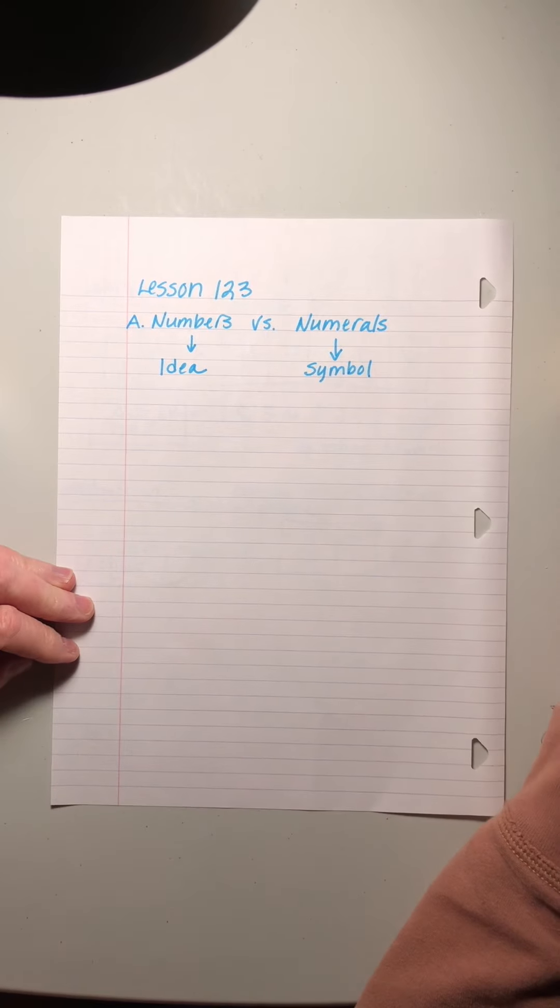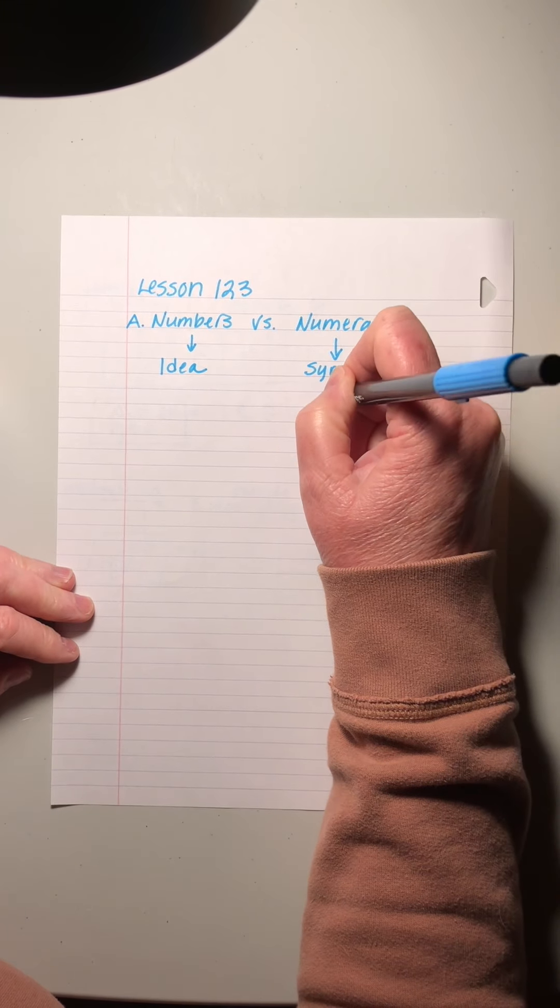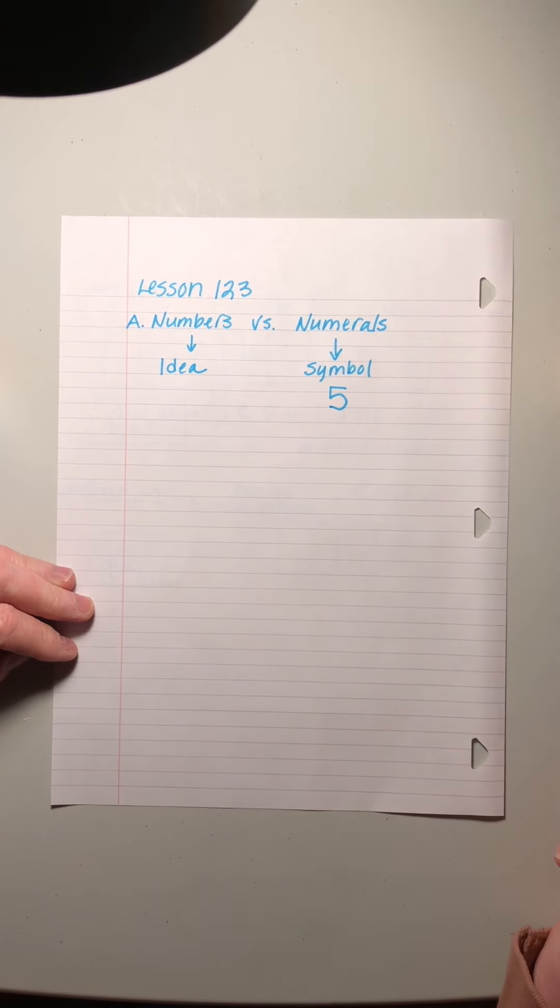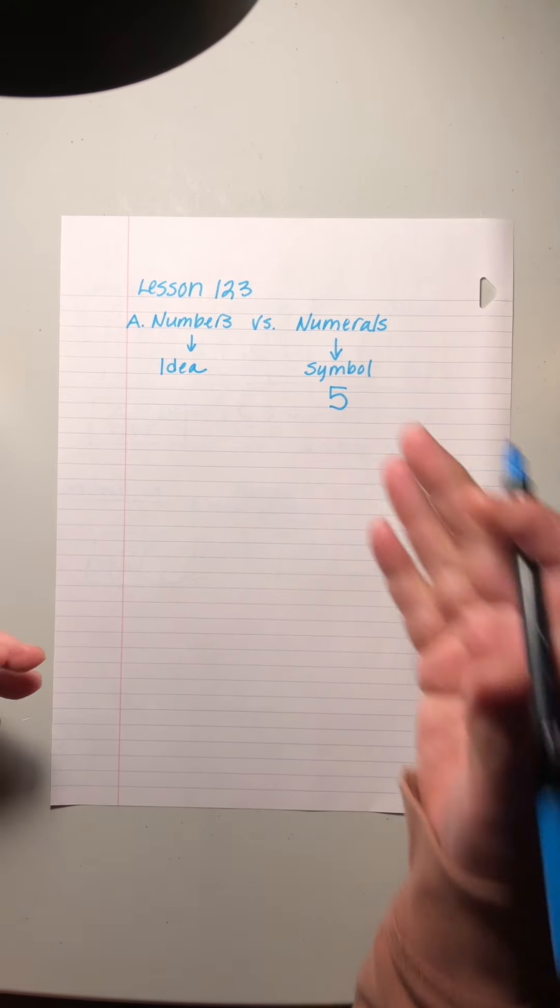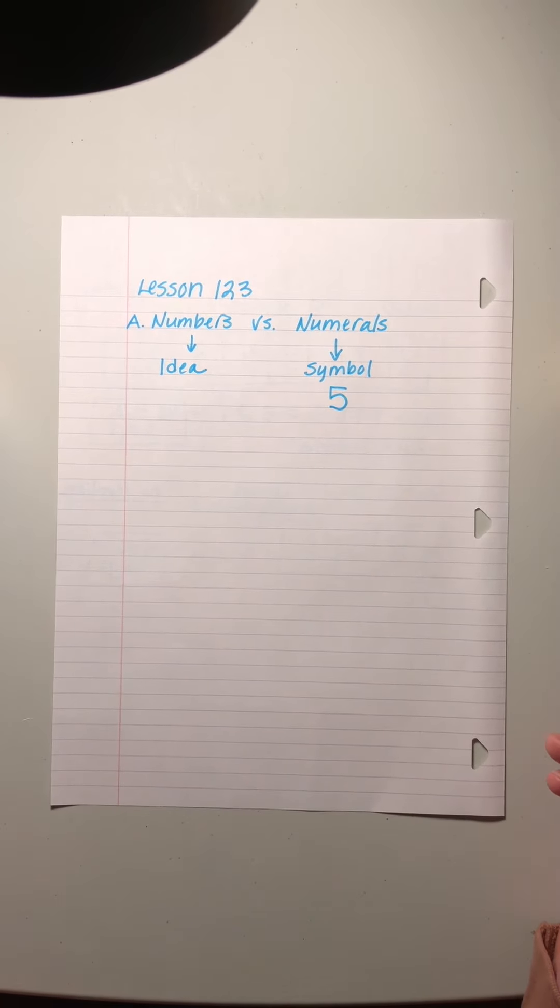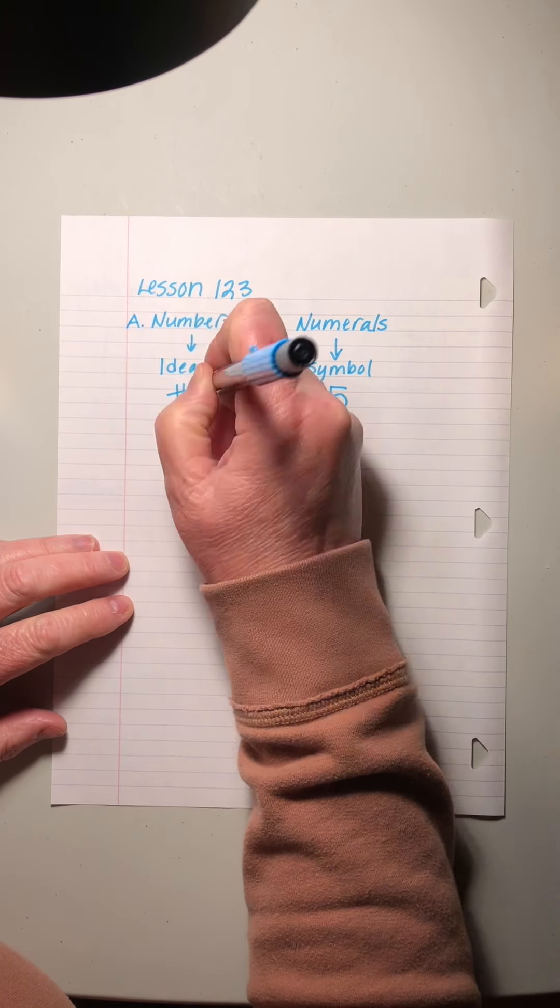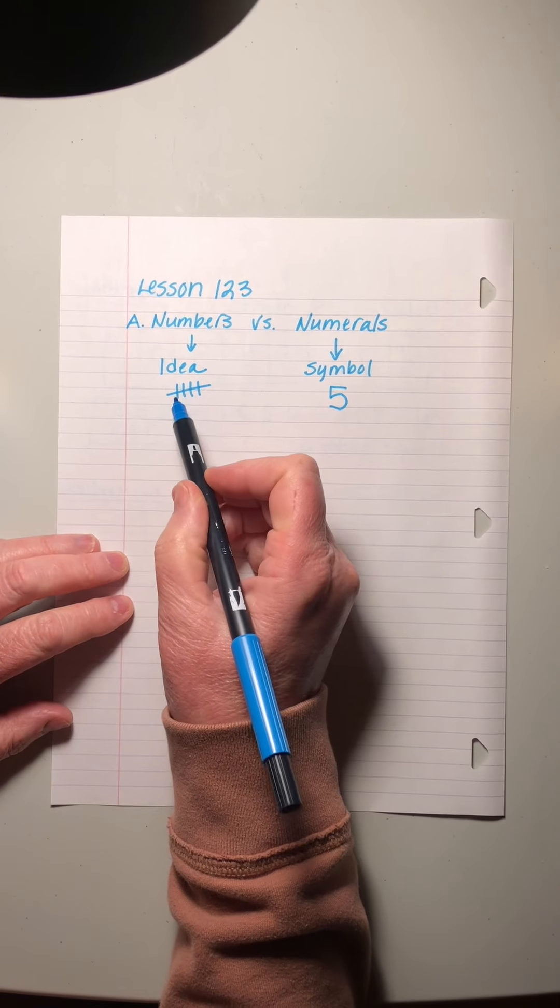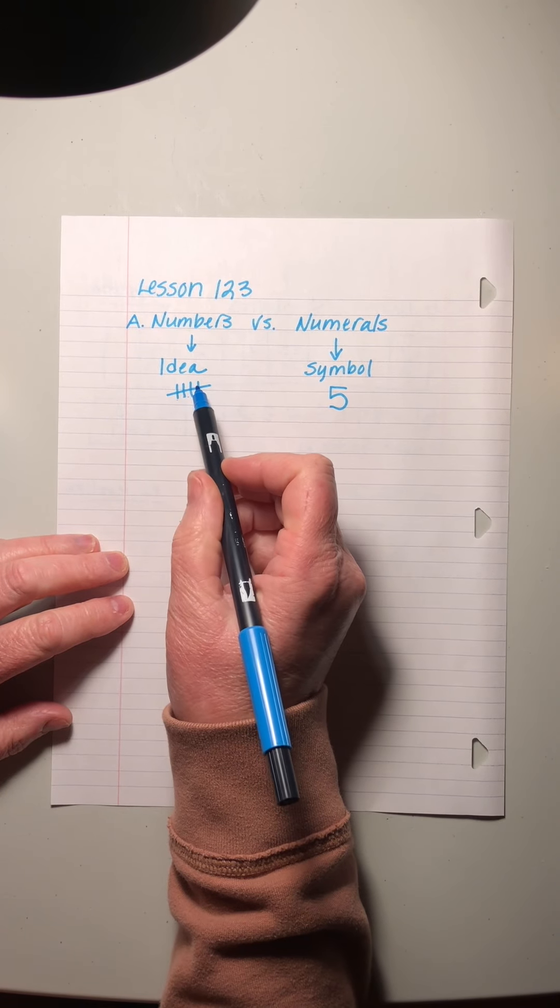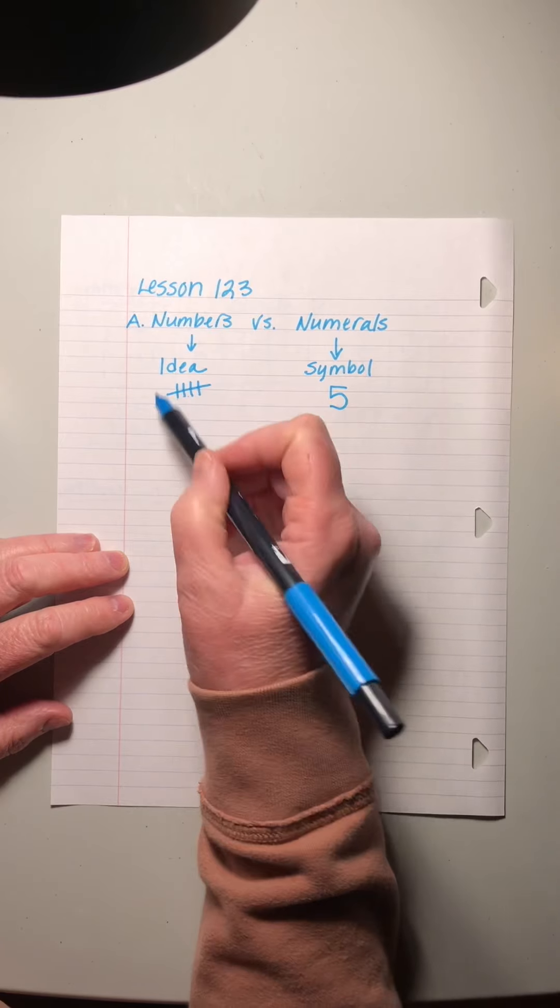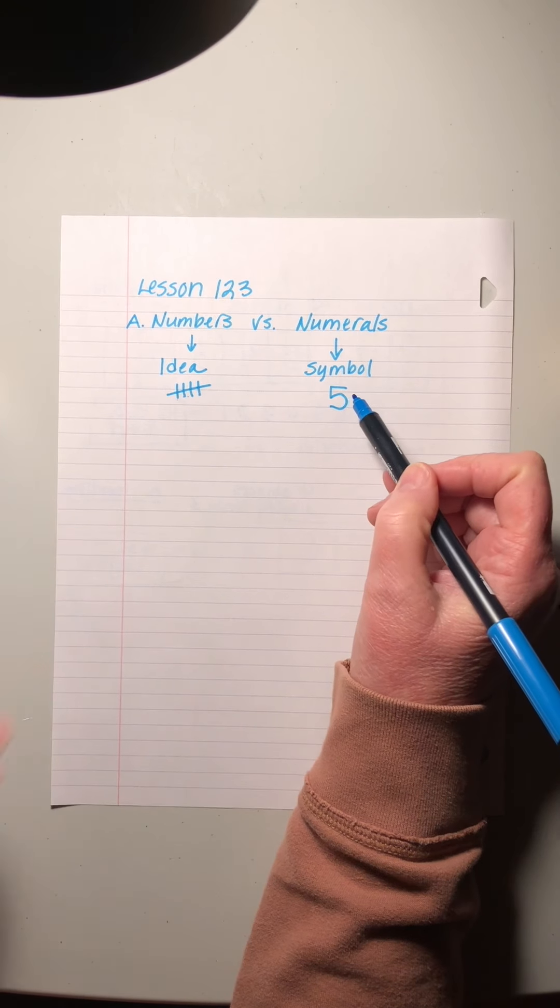So if I say the number five, I can make that shape, right? And you recognize that shape, and you learned how to make it when you were a little kid, but the symbol is different than the idea of knowing that it's that many things, right? One, two, three, four, five. This is the idea of five. This is the symbol of five.